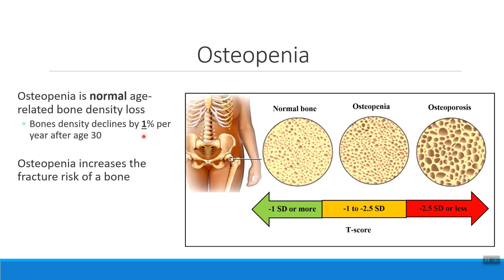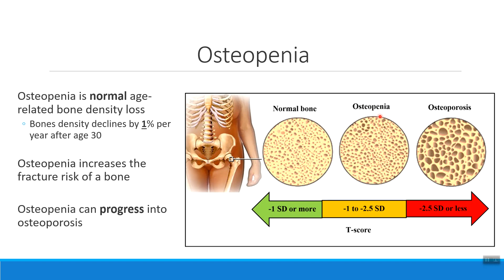This decrease in bone density known as osteopenia increases the risk that your bone will get fractured. Part of this is because we don't have as much calcium to make the bone strong, and part of this is because the collagen is no longer as strong as it used to be. Osteopenia has the ability to progress into the disorder you're more familiar with: osteoporosis.